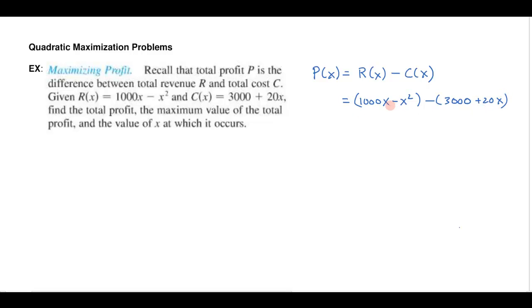Then what that simplifies to, that'll give me my profit, right? So let's go ahead and simplify that. 1000x, need another zero in there, minus x² minus 3000 minus 20x.